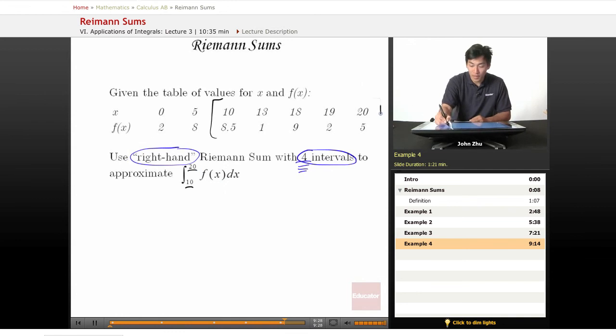We still only care about this region. We have our intervals here, and this time we're interested in these values because it's a right-hand Riemann sum.